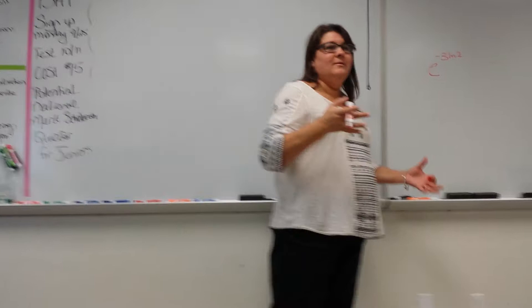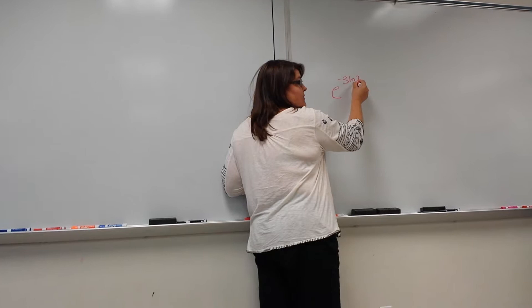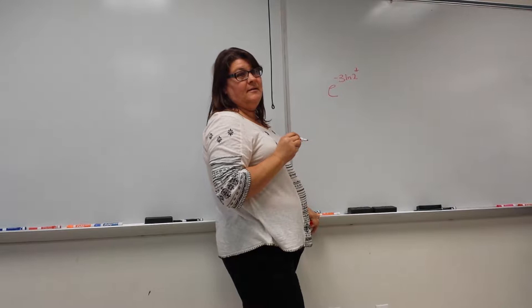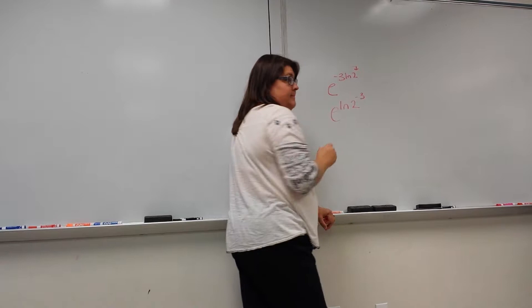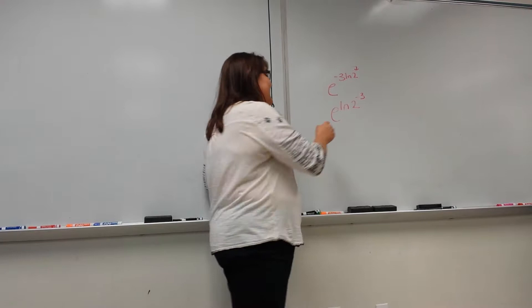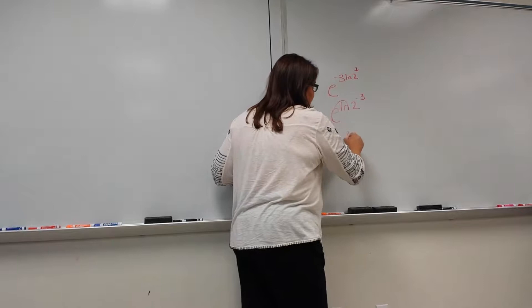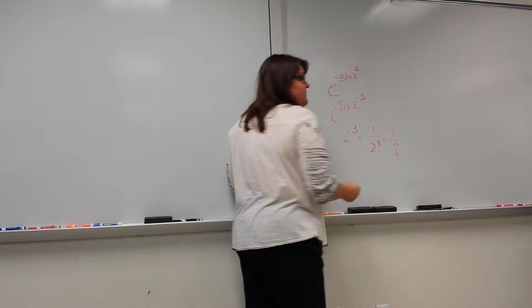There is a rule: if you can remember that the negative 3 in front of ln can come up as an exponent, because it's in front, so it would be e to the ln of 2 to the negative 3. When the e and the ln are touching, they cancel. So what's left is 2 to the negative 3, which is 1 over 2 to the 3rd, which is 1 over 8.